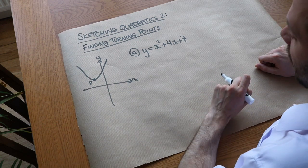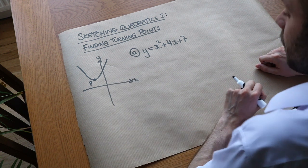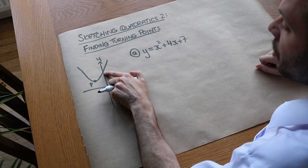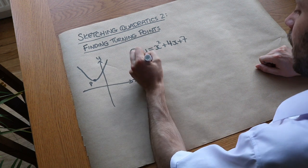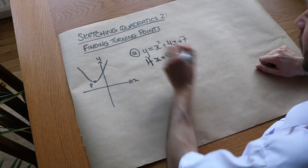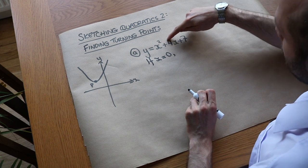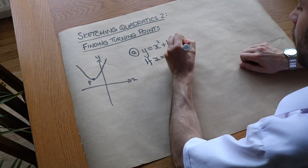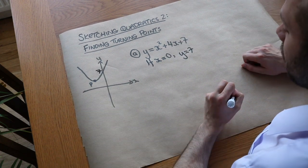But there's still interesting information about the graph we can determine that allows us to sketch it effectively. Firstly, we still can find the y-intercept by making x equal to zero. So if x is zero, then y equals zero squared plus four times zero plus seven, which gives y equals seven. So the y-intercept is seven.